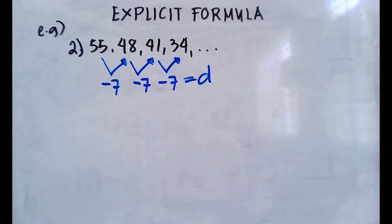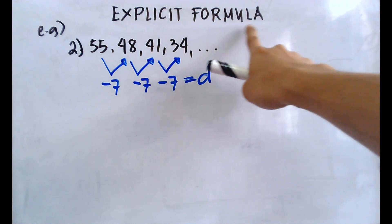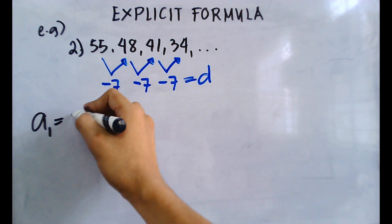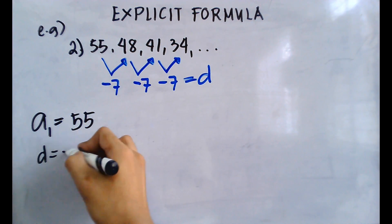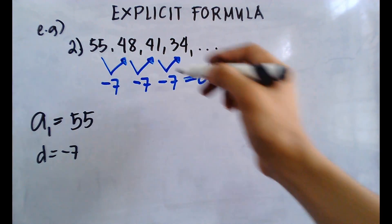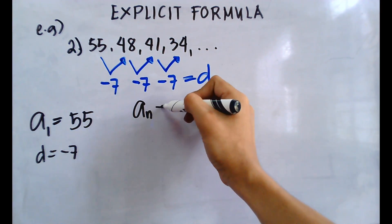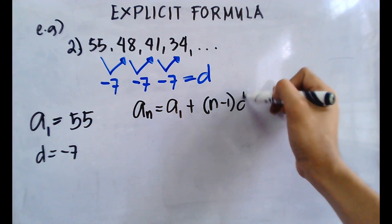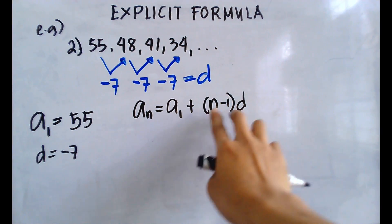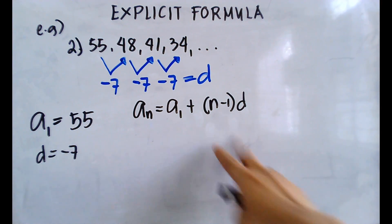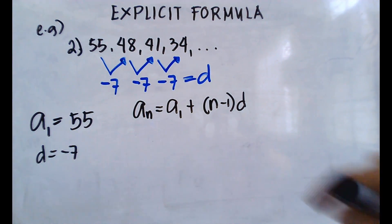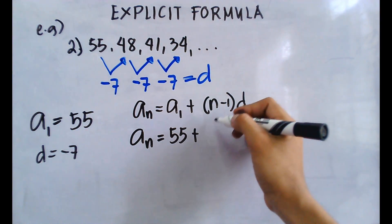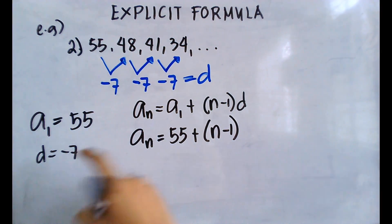Since this is an arithmetic sequence, we can find the explicit formula. We need the first term, which is 55, and the common difference, which is negative 7. Using the arithmetic sequence formula a sub n equals a sub 1 plus d times (n minus 1), substitute: a sub n equals 55 plus negative 7 times (n minus 1).